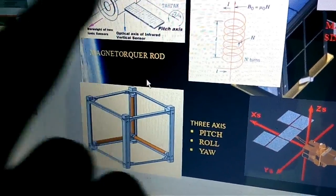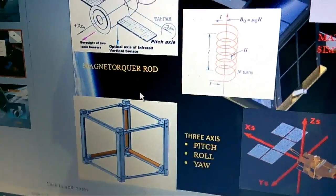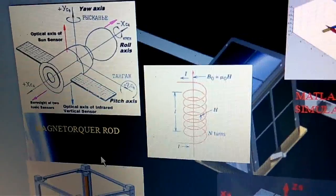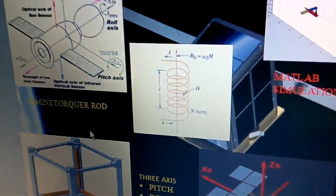Along with these, we have to determine the magnetic flux density and magnetic field density of that magnetorquer rod, just like a solenoid.